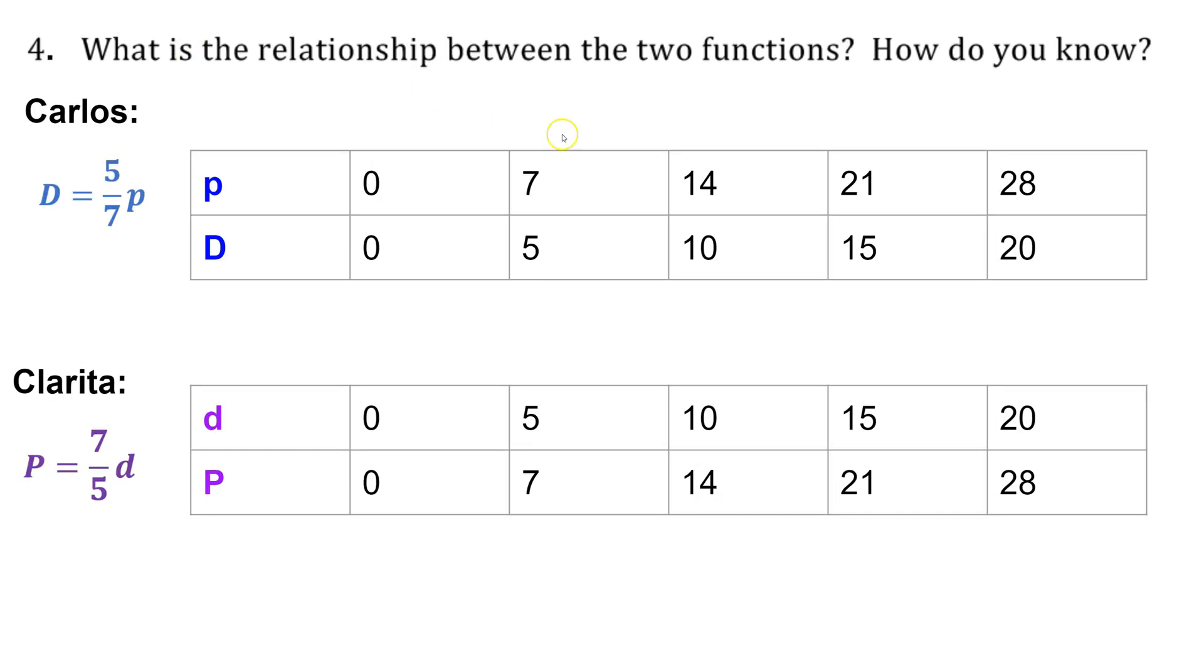Question four asks what is the relationship between the two functions that we've developed. So again Carlos's was D equals 5 sevenths P and Clarita's was P equals 7 fifths D. If I look at a table of values, you can see Carlos's table of values at 7 pounds of food will cost $5, 14 pounds of food will cost $10, 21 pounds of food will cost $15.